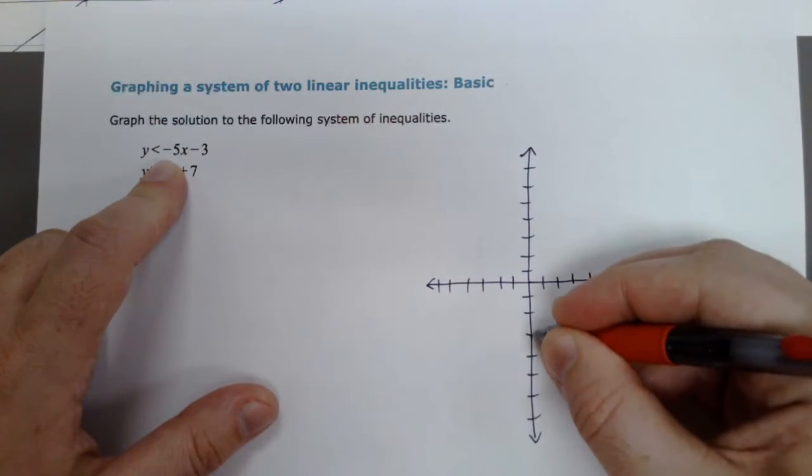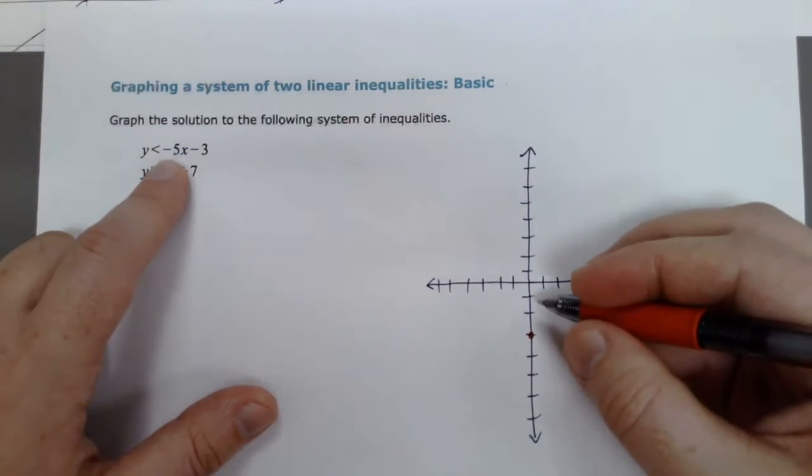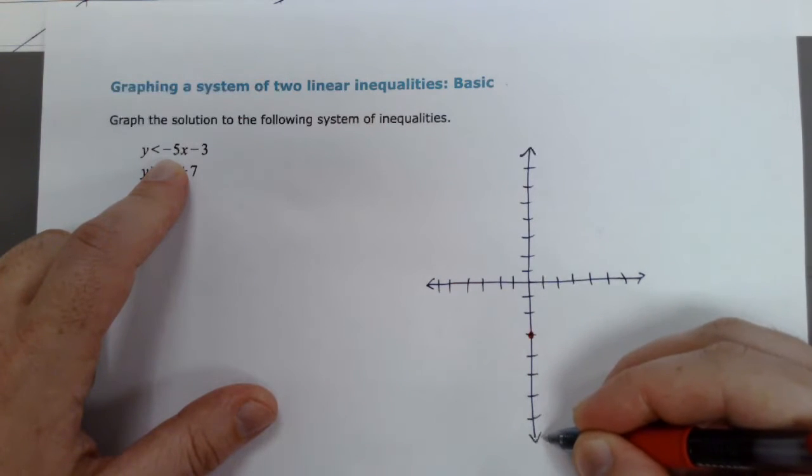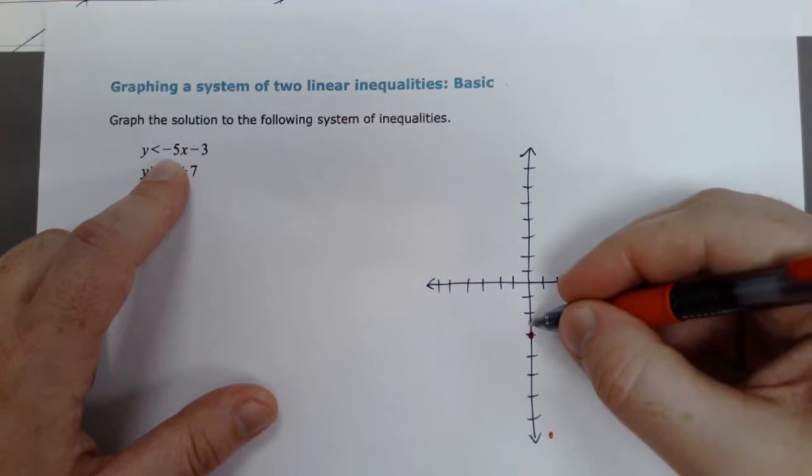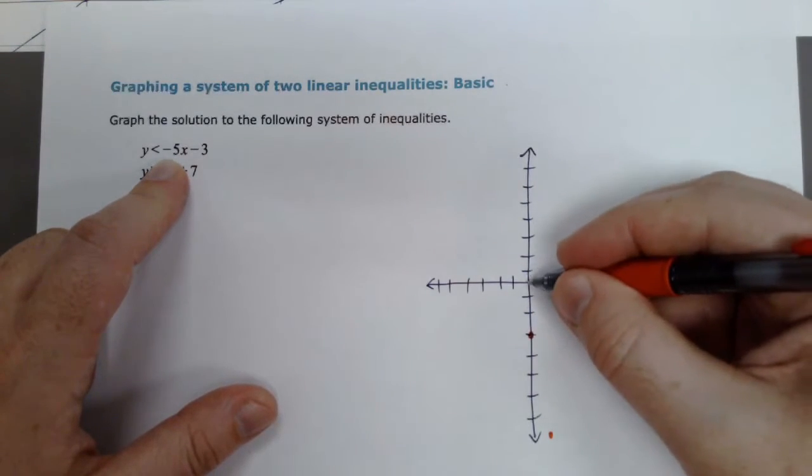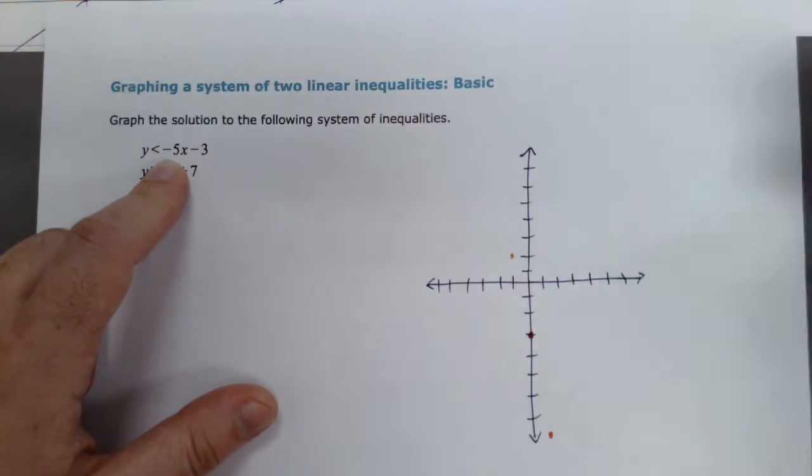We're going to go down to negative 3. We have a slope of negative 5, so I'm going to go down 5 more, and then right 1. Alternately, if you run out of room, remember you can always go up 5 and left 1, and you'll get your line that way.